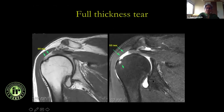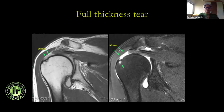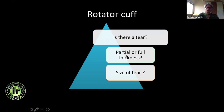Is it a full thickness tear? A full thickness tear is very easy to identify — there's a whole big gap, no tendon remaining at all. We know there's a tear, we know whether it's partial or full thickness. What's also important is to tell the size of the tear.